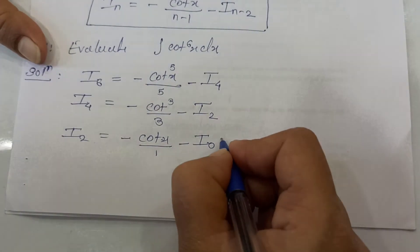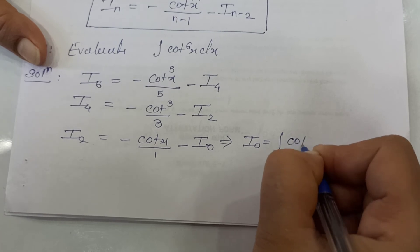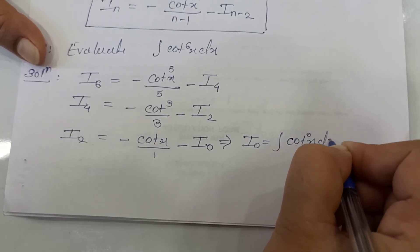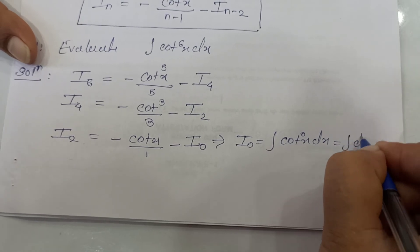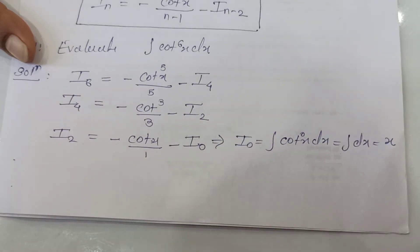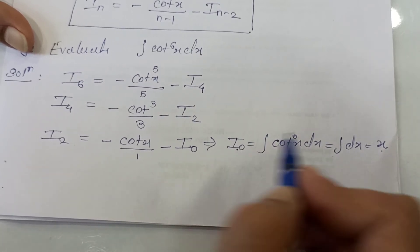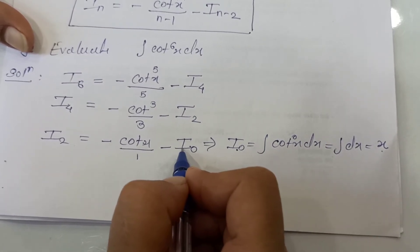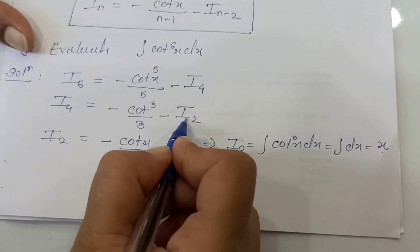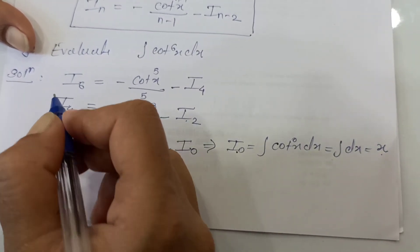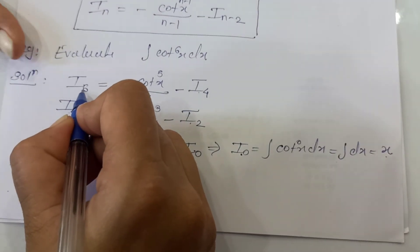I₀ is integration of cot raised to 0x dx, and cot raised to 0 equals 1, so it is simply integration of dx, which equals x. We now have I₀ equals x. We substitute I₀ into I₂, then use I₂ to get I₄, and then use I₄ to get I₆ using back substitution.